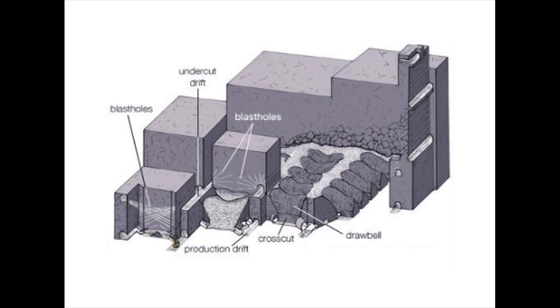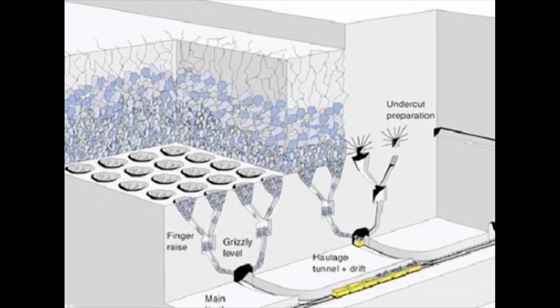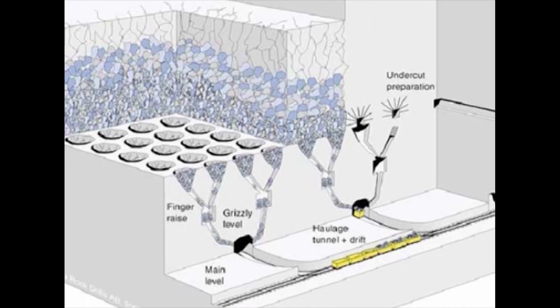Block caving is a large-scale method applicable to mineralization on the order of 100 million tons in all directions, contained in rock masses amenable to caving — that is, with internal stresses which, after removal of supporting elements, assist the fracturing of the mined block. An annual output ranging from 10 to 30 million tons is the anticipated yield; these requirements limit block caving to a few special mineral deposits.